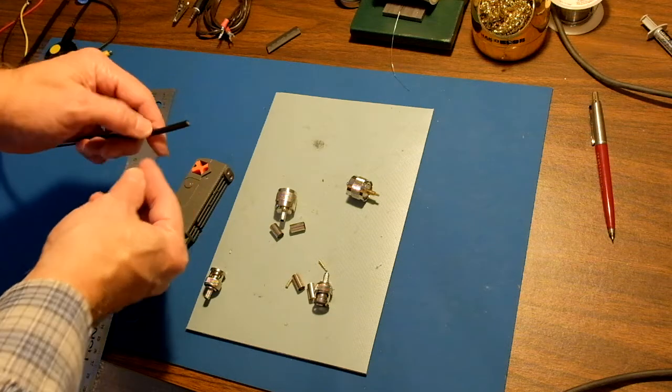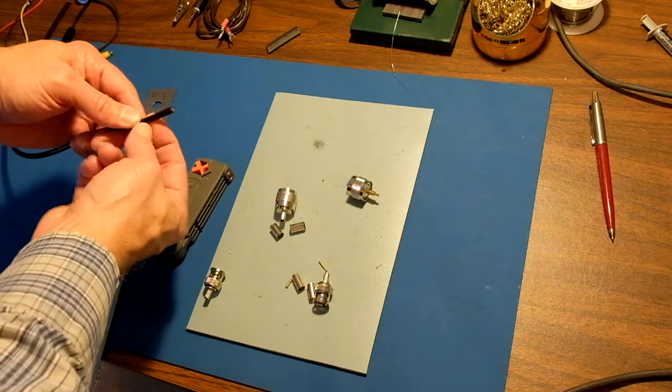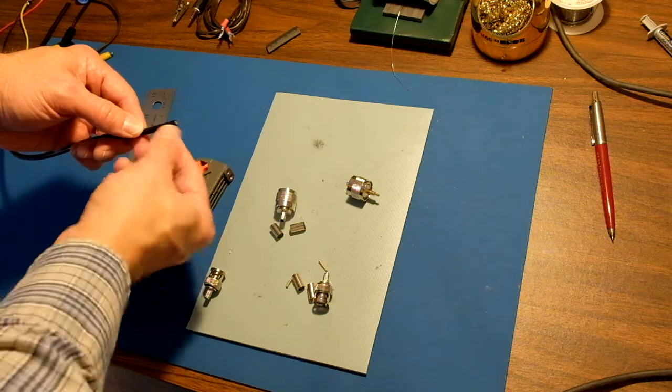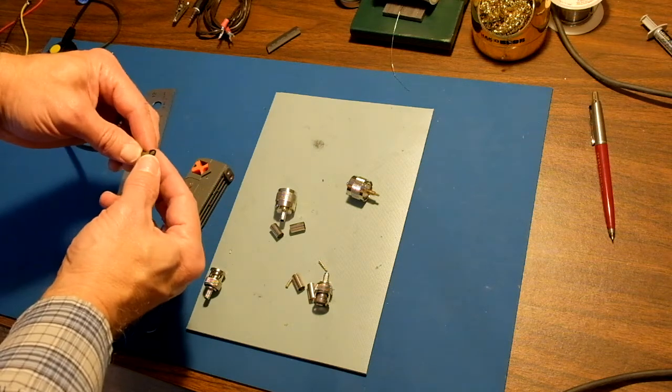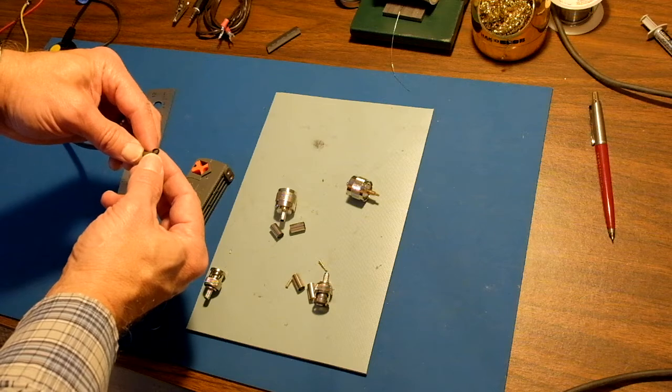There's two things you have to cut here. You have to cut the outer sheath, leave ground braid which you're going to fold back, and then you're going to have to strip the inner conductor as well.